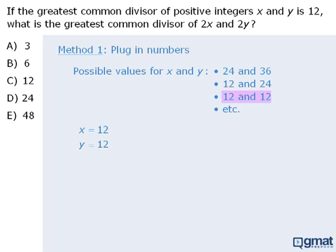So let's say that x equals 12 and y equals 12. Now if x and y both equal 12, then 2x and 2y must both equal 24. Now that we have values for 2x and 2y, we can find their greatest common divisor, which is 24.